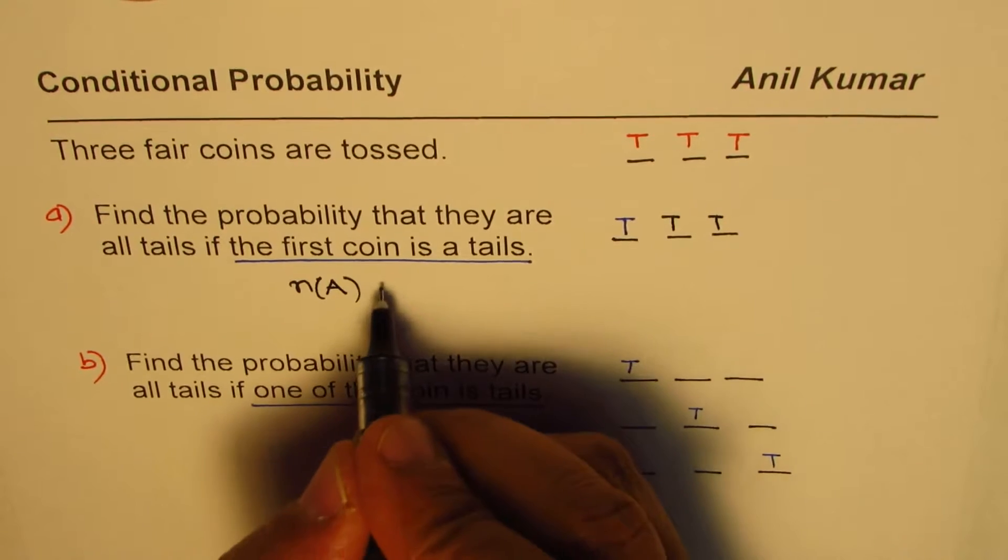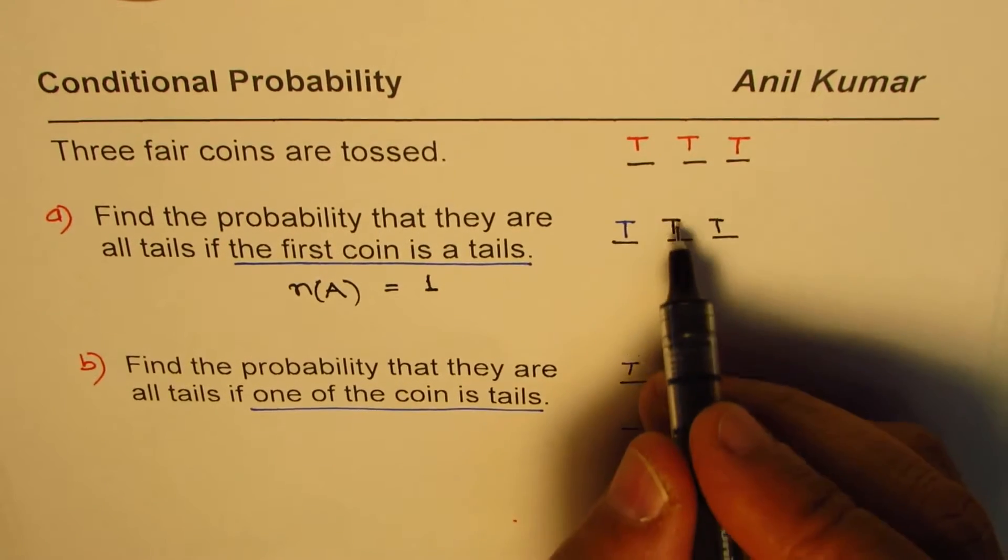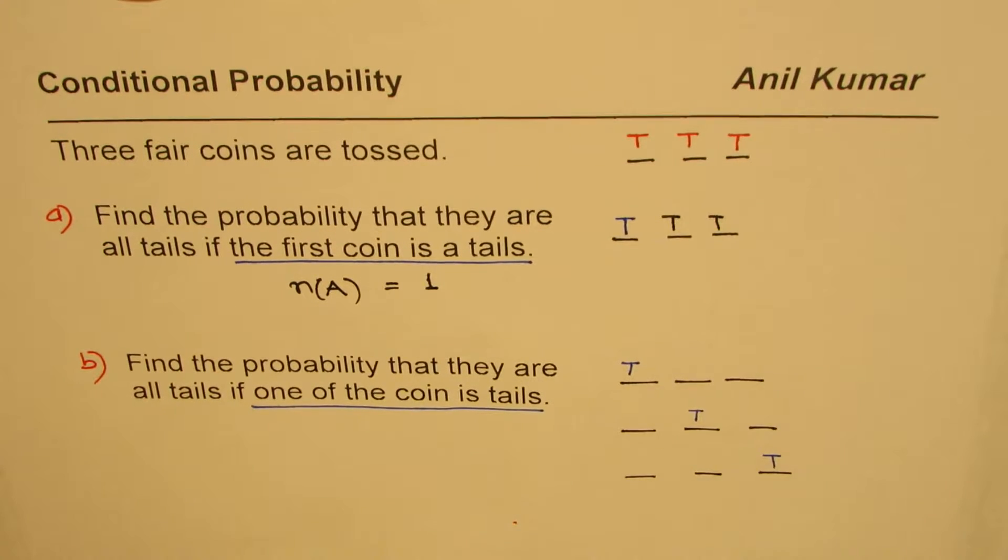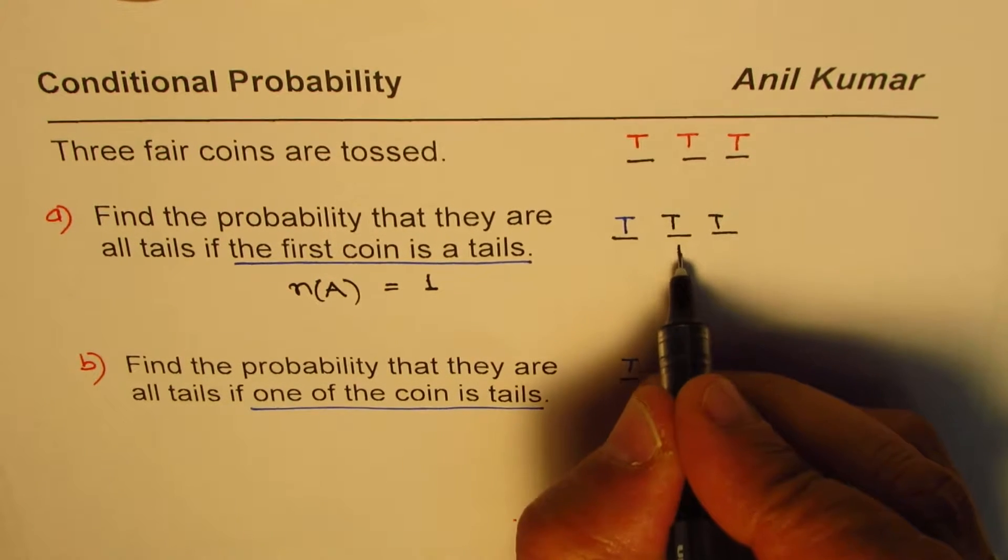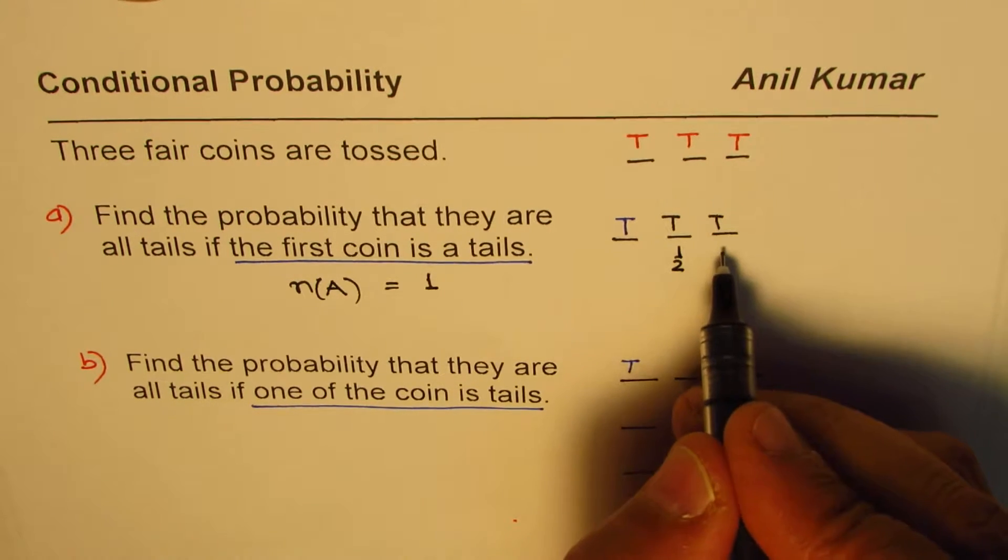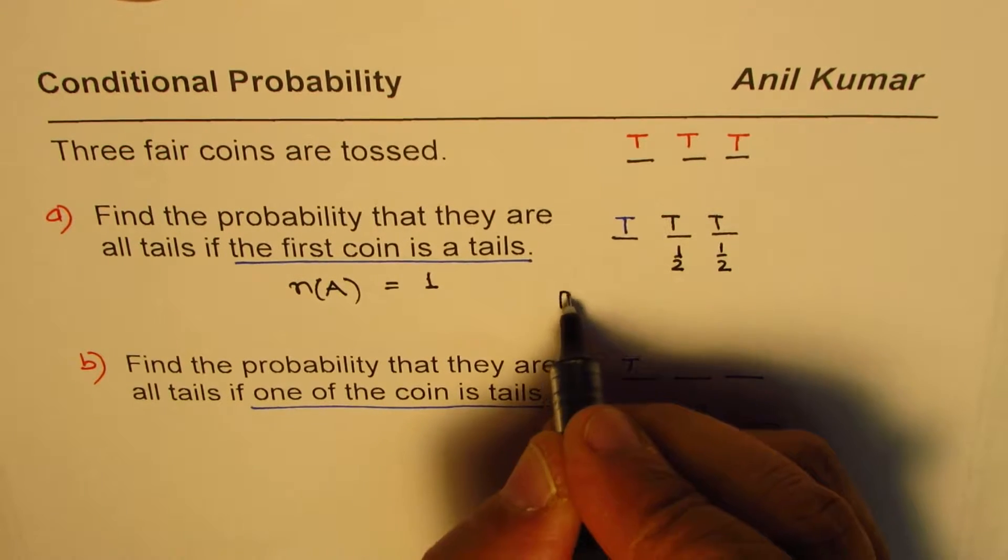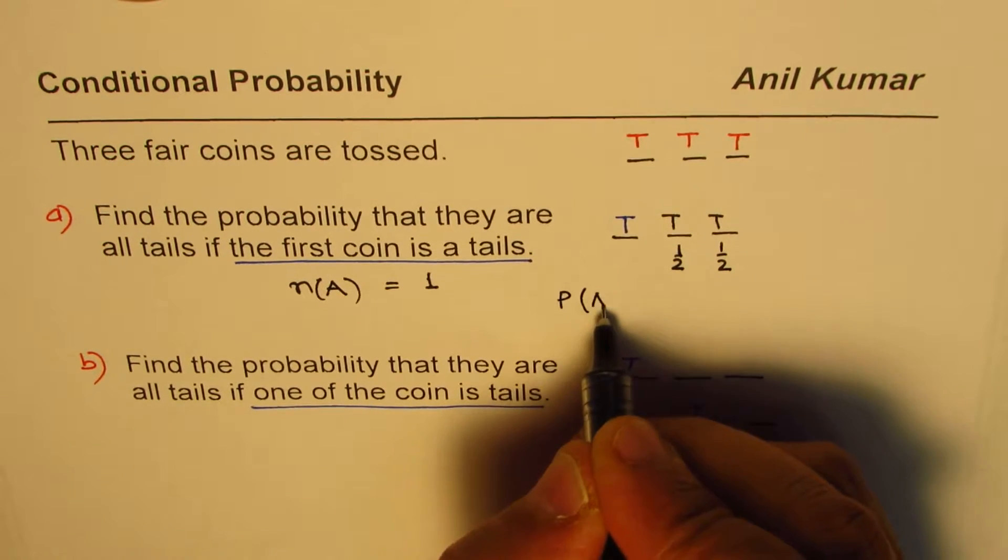The number of favorable chances is just one. Now what is the probability of getting a tail whenever you toss? It is half. This is already done, so we are looking into second and third, and here also the probability is half.